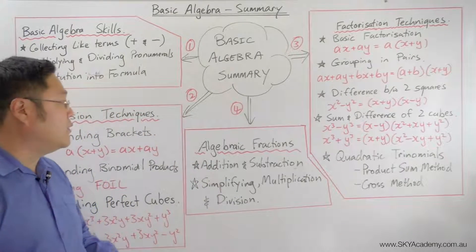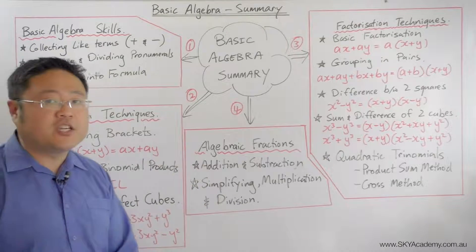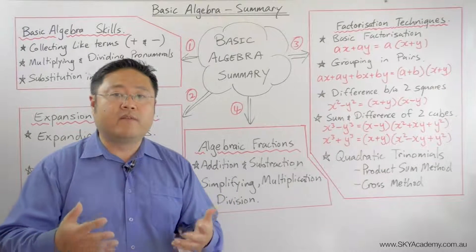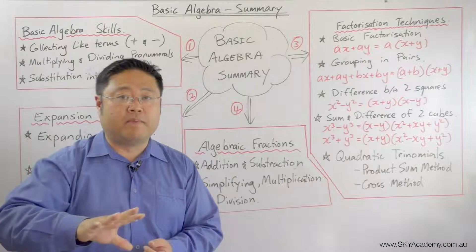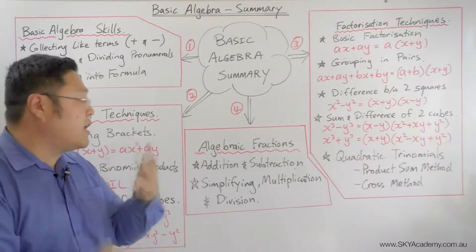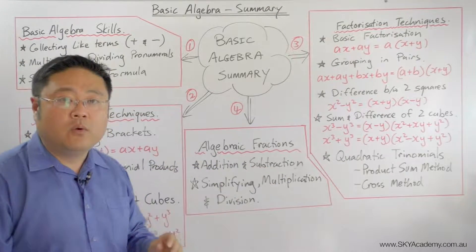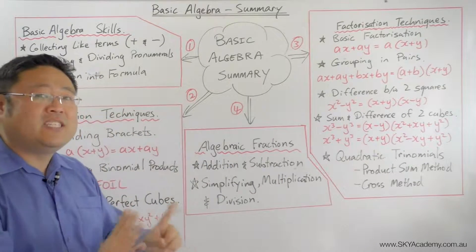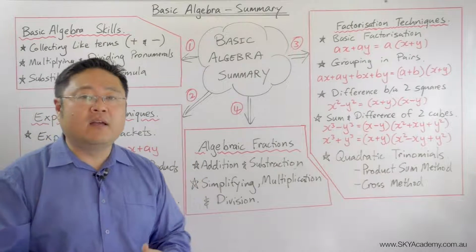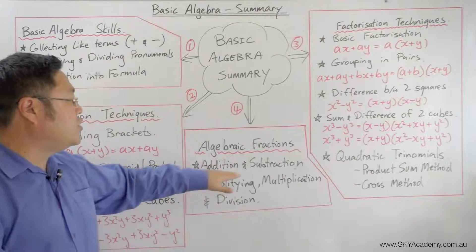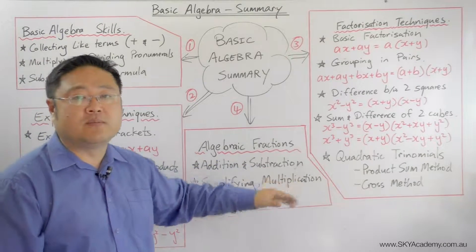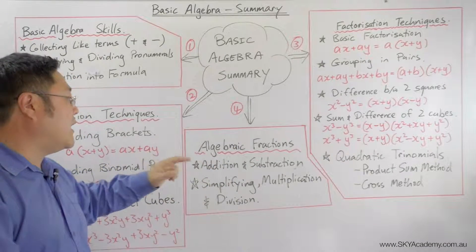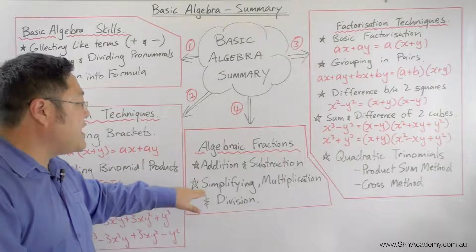Finally, we looked at algebraic fractions — algebraic expressions that involve fractions, with an expression on the top and an expression on the bottom. For addition and subtraction of algebraic fractions, you need a common denominator. If they have different denominators, you need to work out a common denominator before adding or subtracting. Go back to that episode if you're stuck.